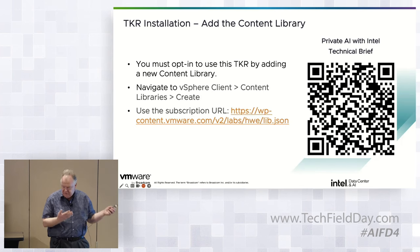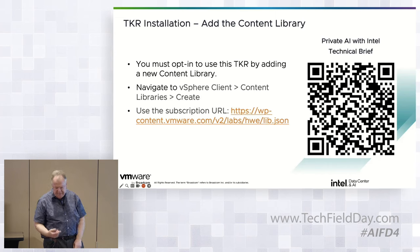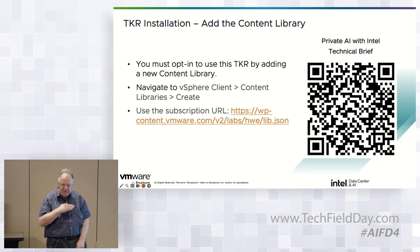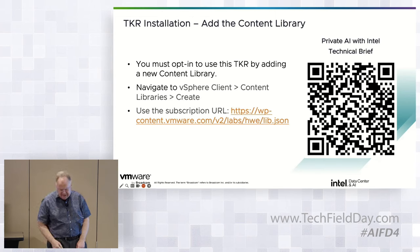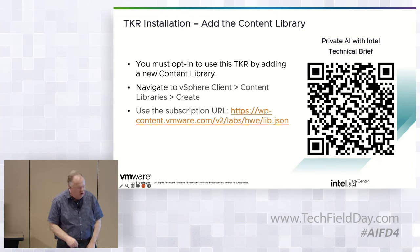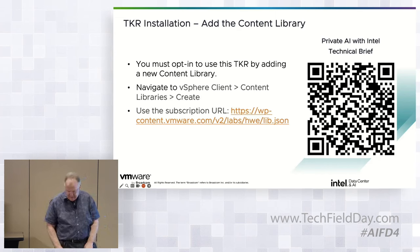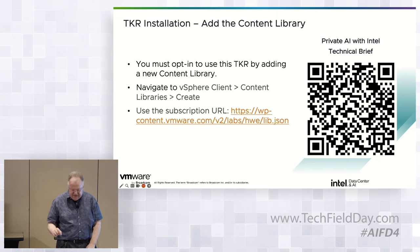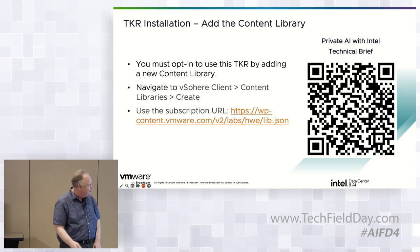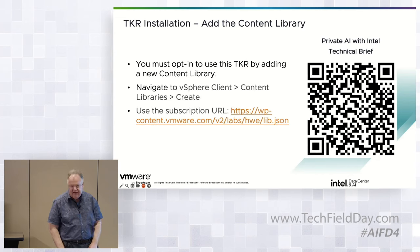As a system administrator setting this up, you need to add a second content library — this is what ensures customers who want the stable release don't accidentally get this version, so you have to opt in by adding the content library. The QR code takes you to a technical brief that goes through all these steps in detail. To add the content library, go to vSphere Client in vCenter, go to Content Libraries, click Create, and add the specific subscription URL.